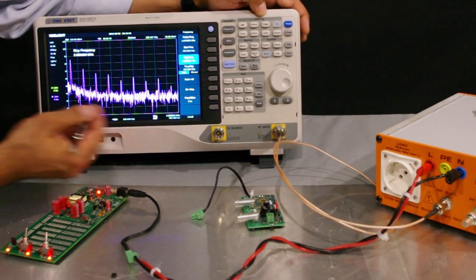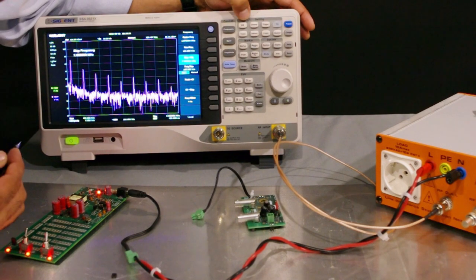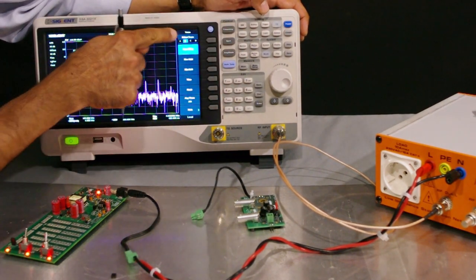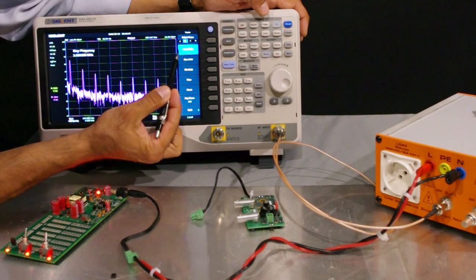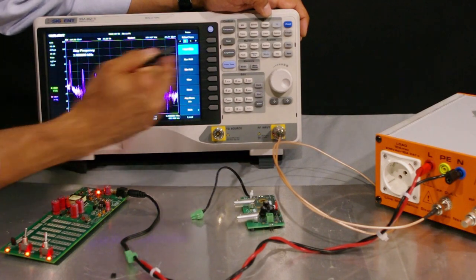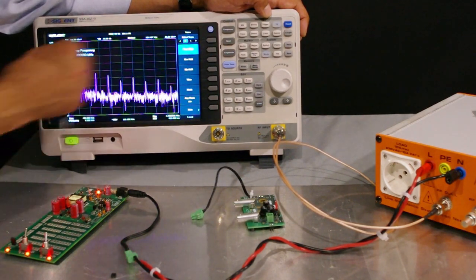So in order to freeze this, you go to trace. You press the trace button, and at the moment it's on clear write, so it keeps rewriting, clearing and rewriting, and you can see it jiggle about because it keeps measuring.